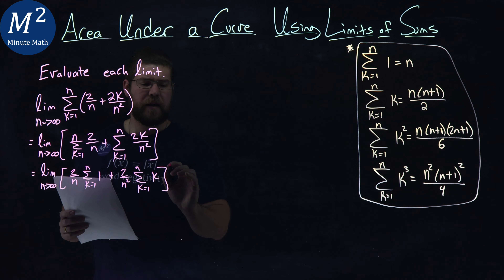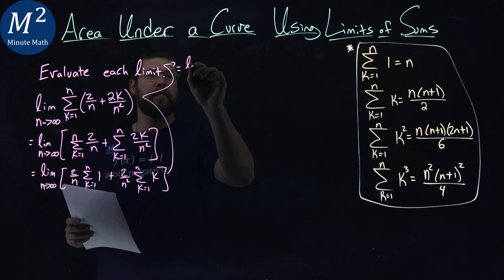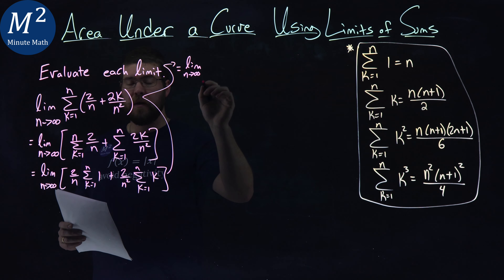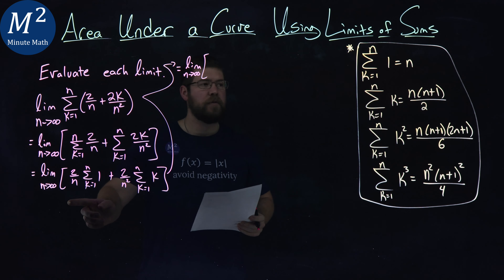So what does that simplify to be? Taking the limit as n goes to infinity of the whole thing, let's use our rules. We have 2 over n times the sum of 1, which is just n using our definition, plus 2 over n squared times the sum of k, which equals n times (n plus 1) over 2.